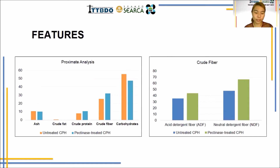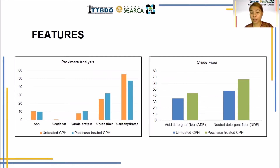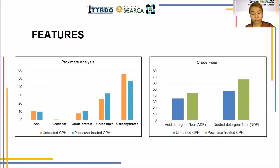The proximate analysis of the untreated and pectinase-treated cacao pod husk showed increased crude protein and crude fiber contents after enzymatic treatment. The proportion of carbohydrates and crude fat decreased. The proportion of crude fiber may be attributed to the higher proportion of insoluble fiber as a result of a decrease in pectin content due to the pectinase treatment.